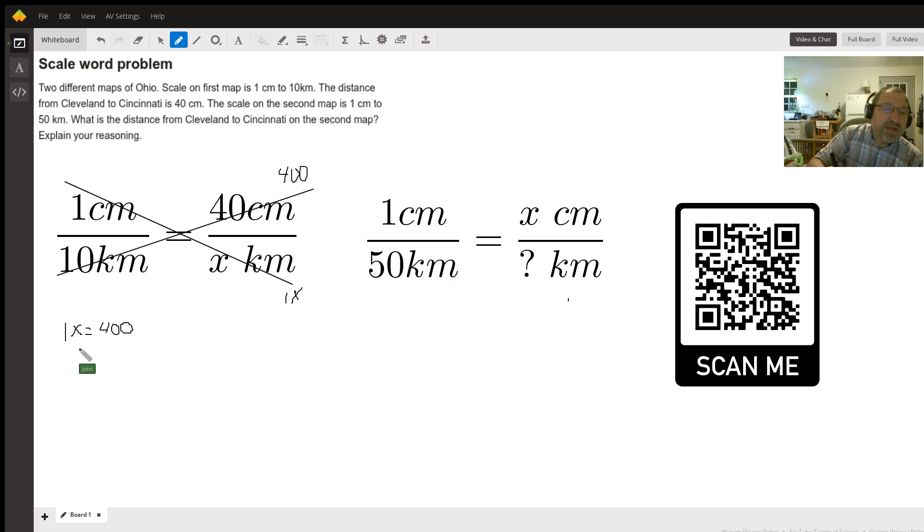Remember, the x by itself—the opposite of multiplying by 1 is dividing by 1. Whatever we do to one side of the problem we have to do to the other. So 1 divided by 1 cancels out, we're left with just x, and 400 over 1 is a whole number of 400. So how far is it really on this map from Cleveland to Cincinnati? It's 400 kilometers.